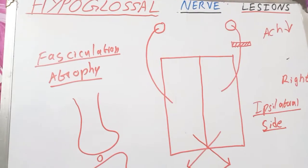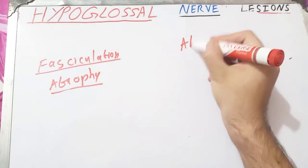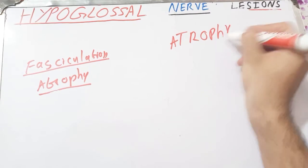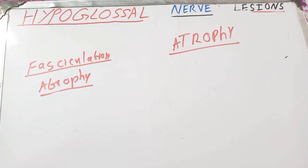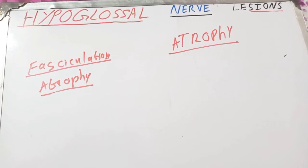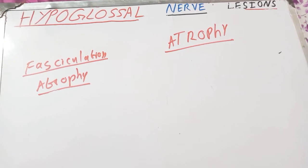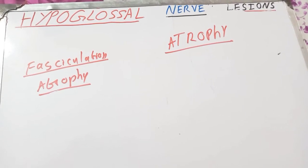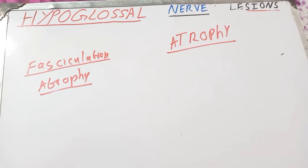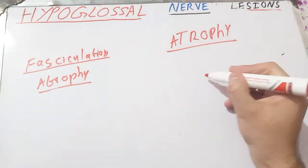Atrophy is the reduction in the size and number of the muscle fibers, and it is also associated with lower motor neuron lesions. The proposed mechanism is that acetylcholine released at the neuromuscular junction causes some degree of hypertrophy and hyperplasia of the muscle and plays a role in muscle growth. When the muscle is denervated, acetylcholine is not released, and the muscle will start to atrophy.